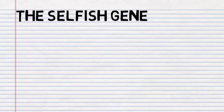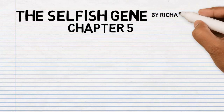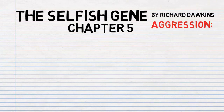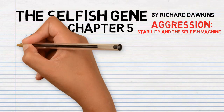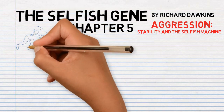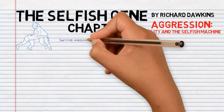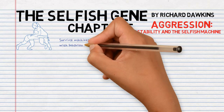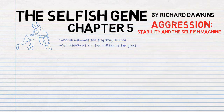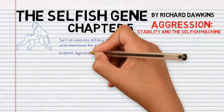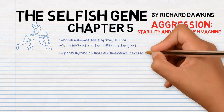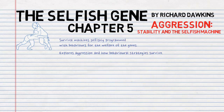The Selfish Gene, Chapter 5 by Richard Dawkins: Aggression, Stability and the Selfish Machine. This chapter continues the assumption that individual survival machines are selfishly programmed with behaviors for the welfare of the genes as a whole. Acknowledging that all forms of interaction involve some conflict of interest, Dawkins delves into the misunderstood topic of aggression, exploring how behavioral strategies survive and how genes that program their behaviors become more successful in the gene pool.